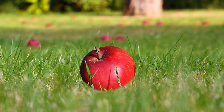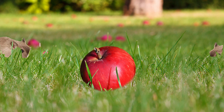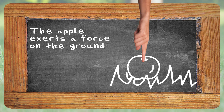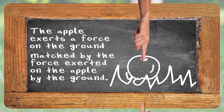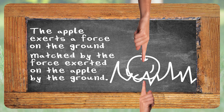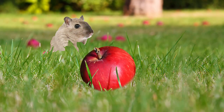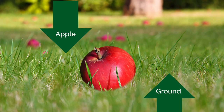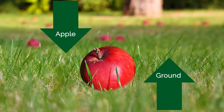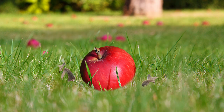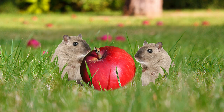And to our apple orchard we go once again. Newton tells us that every interaction has a pair of balanced but opposite forces. It helps us explain how the apple sits on the ground. The apple exerts a force on the ground that's matched by the force exerted on the apple by the ground. The apple's force presses down and the ground presses up with an equal force.